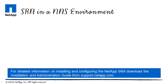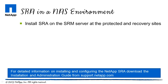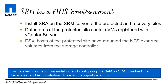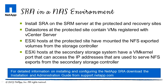The SRA needs to be installed on the SRM server in the protected and recovery sites. In a NAS environment, verify that the data stores in the protected site contain VMs registered with vCenter server, that the ESXi hosts at the protected site have mounted the NFS exported volumes from the storage controller, and that the ESX hosts at the secondary storage system have a VM kernel port that can access the IP addresses used to serve NFS exports from the secondary storage controller.